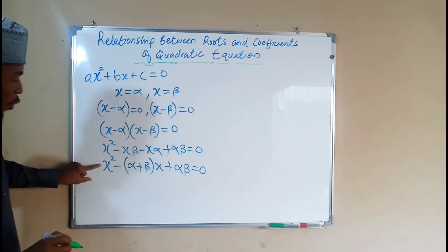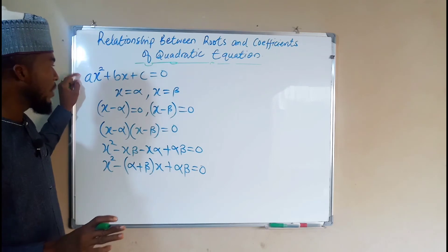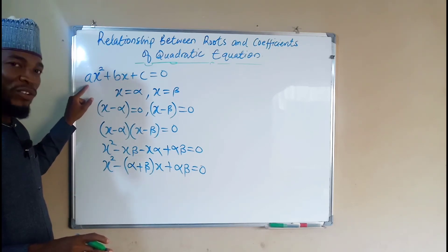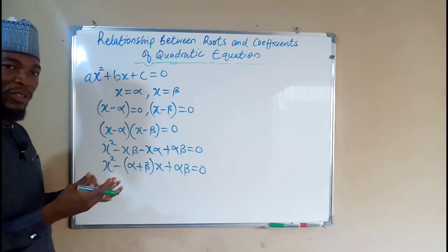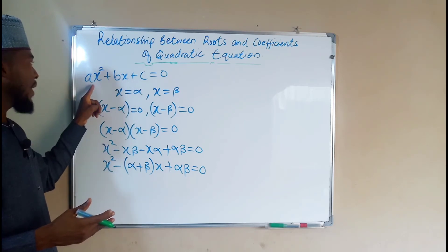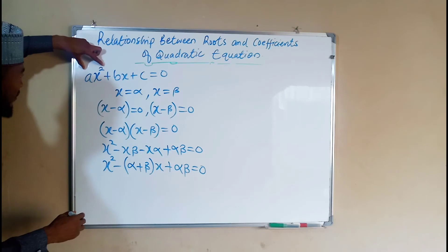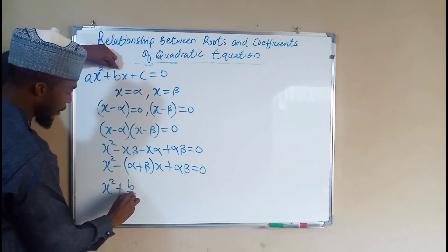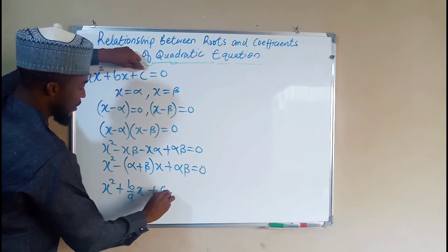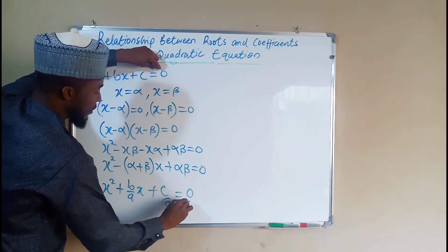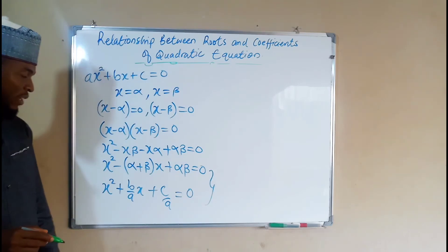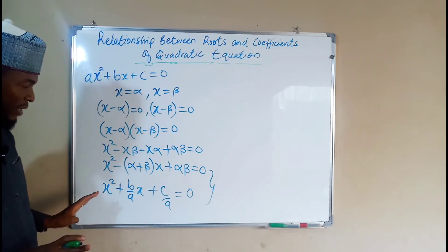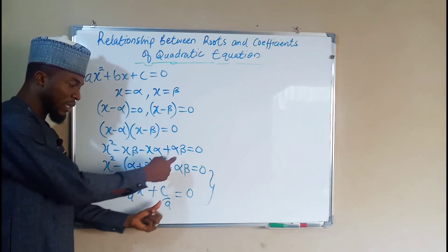This quadratic equation and the original ax² + bx + c = 0 are exactly the same, since we used the roots of the original to form this one. The only difference is the leading coefficient: a in the original versus 1 here. To make them comparable, we divide the original through by a, giving x² + (b/a)·x + (c/a) = 0.